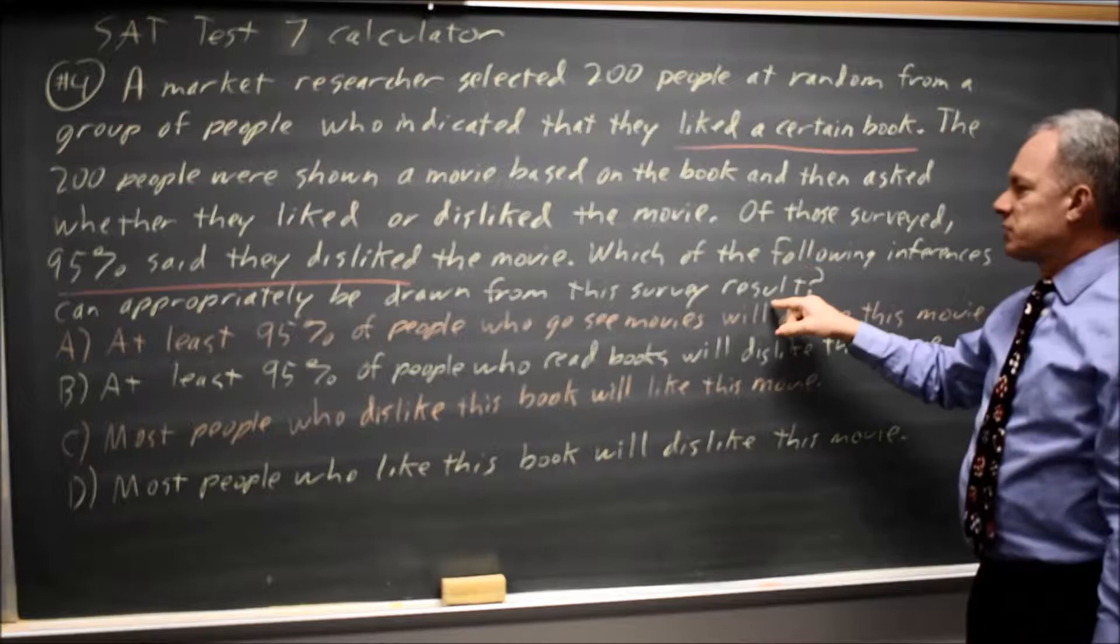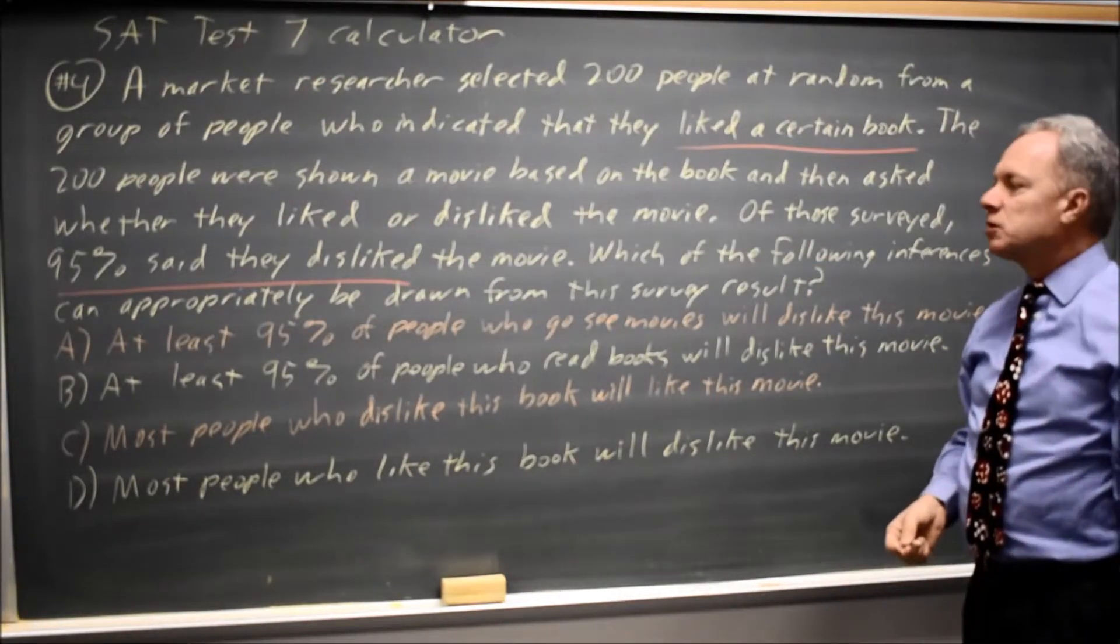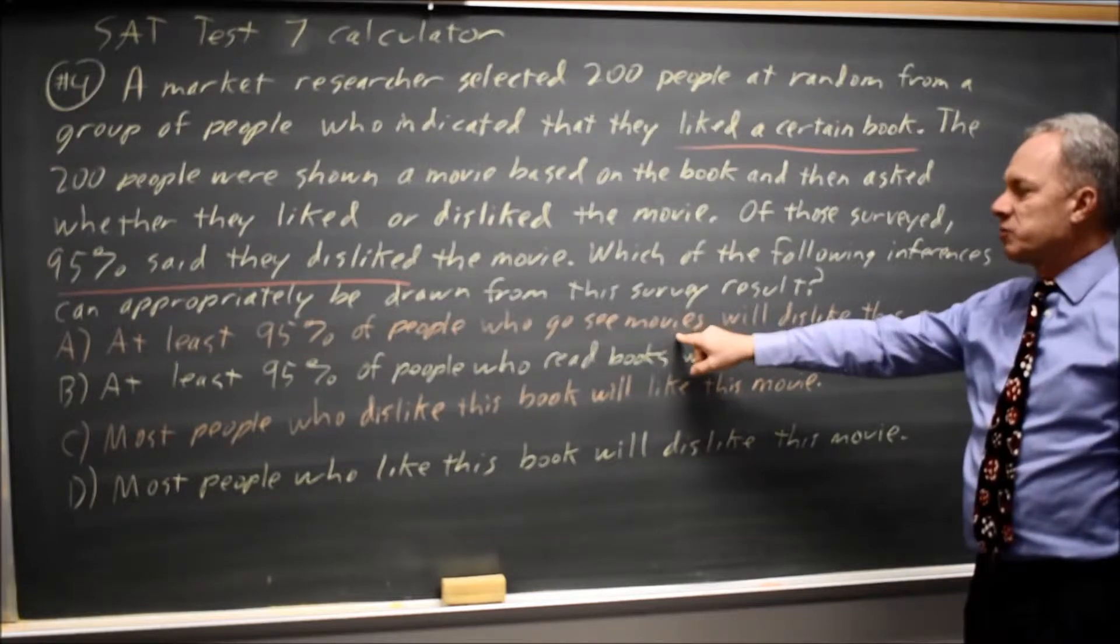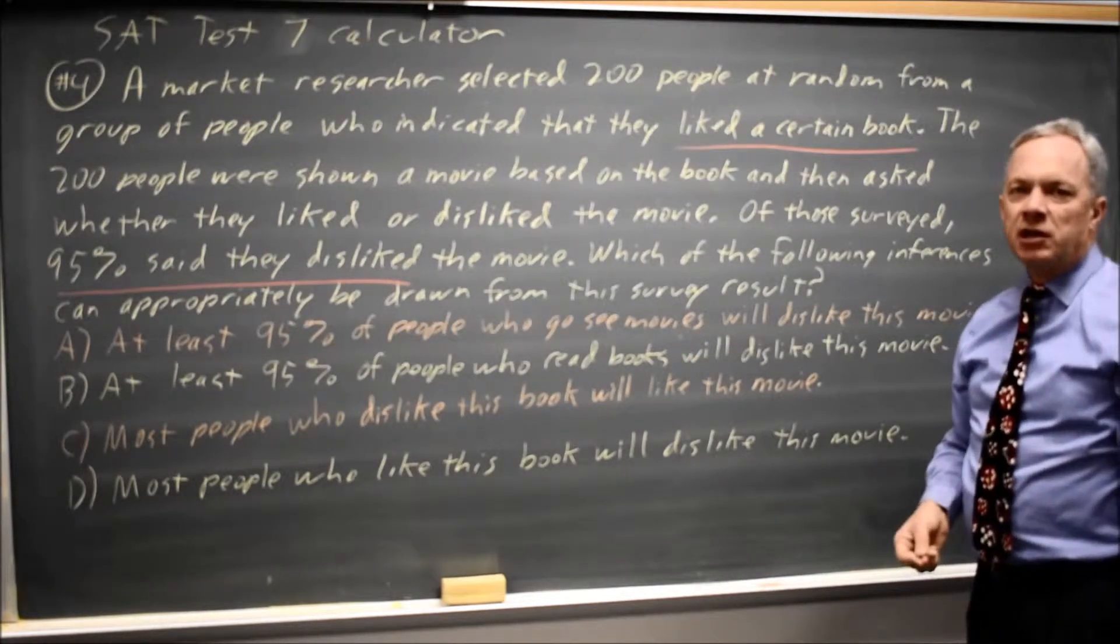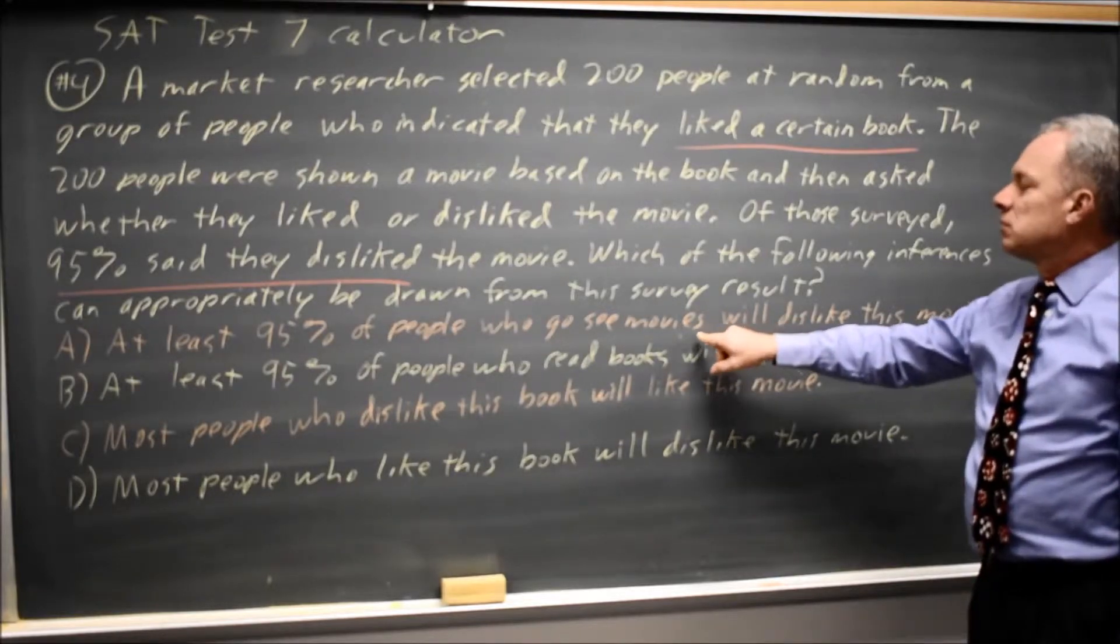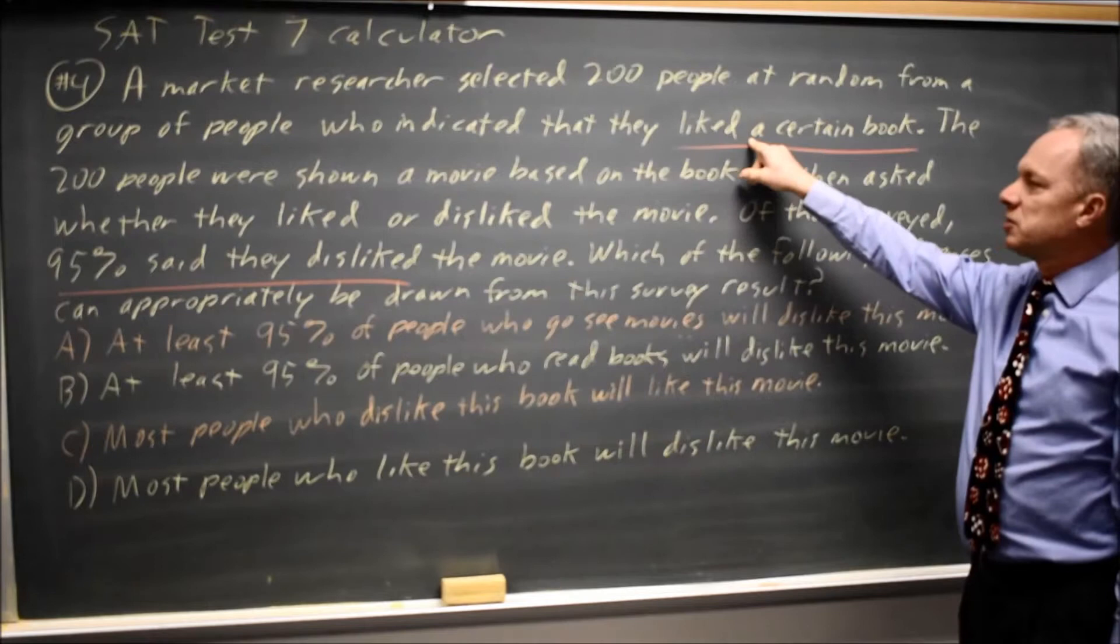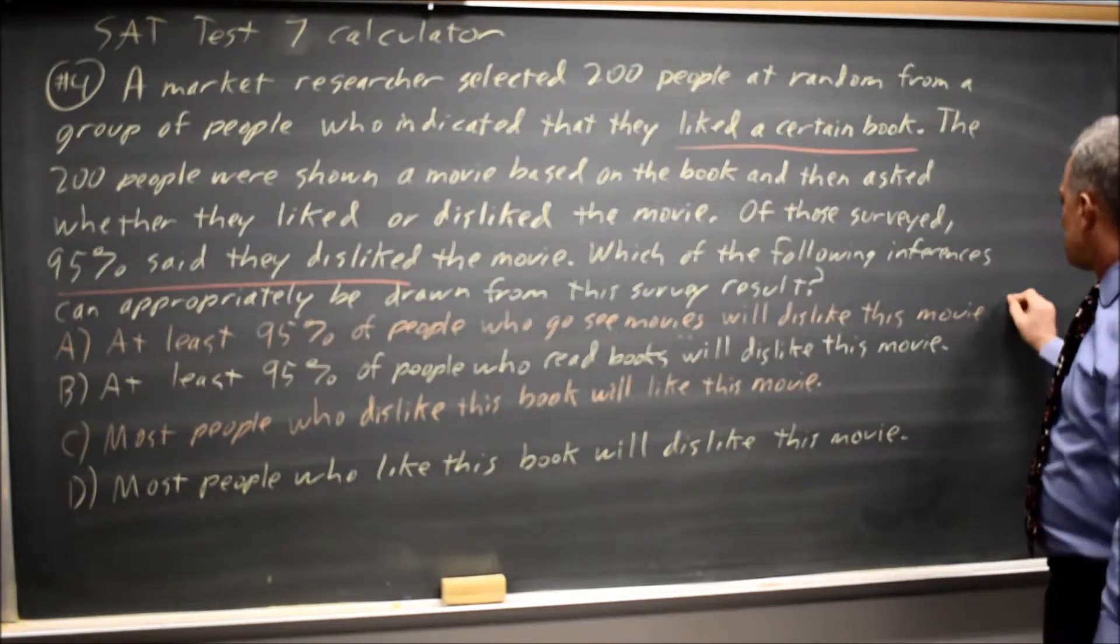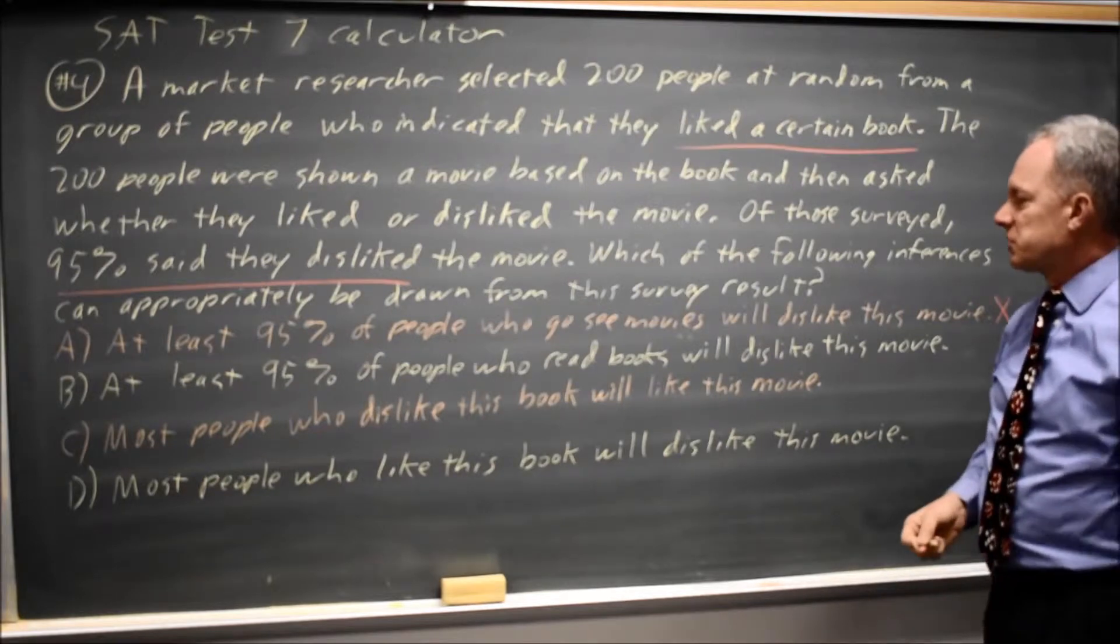Which of the following inferences can appropriately be drawn from this survey result? Choice A, at least 95% of people who go see movies will dislike this movie. Here we're drawing an inference about a larger population than we surveyed. We only surveyed those who liked the book, so we can't conclude that 95% of everyone who goes to movies will dislike this.